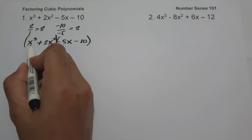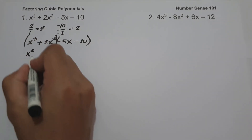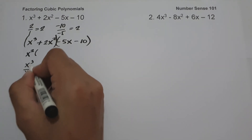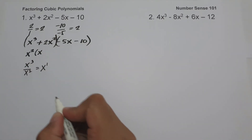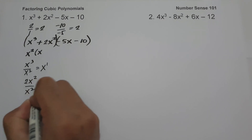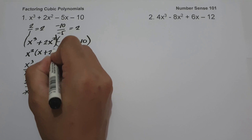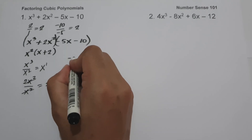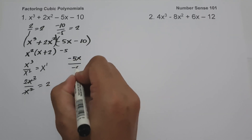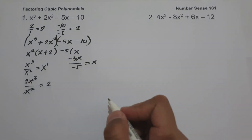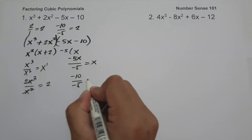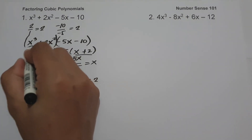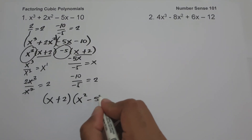The greatest common factor of x cubed and 2x squared is x squared. So let us divide: x cubed divided by x squared — copy the base x and subtract the exponent — that is x. And 2x squared divided by x squared is 2. So we get x plus 2. On the other side, the greatest common factor of negative 5x and negative 10 is negative 5. Negative 5x divided by negative 5 is x, and negative 10 divided by negative 5 is positive 2. So we are going to have x plus 2 times the quantity x squared minus 5, and this will be our answer.